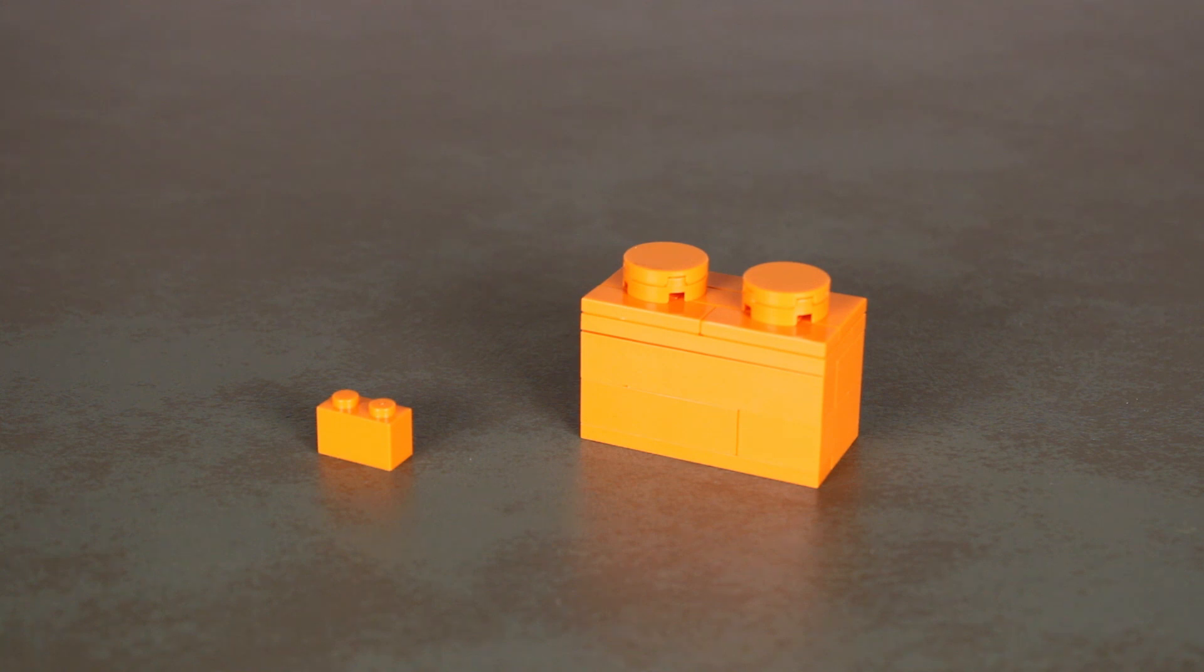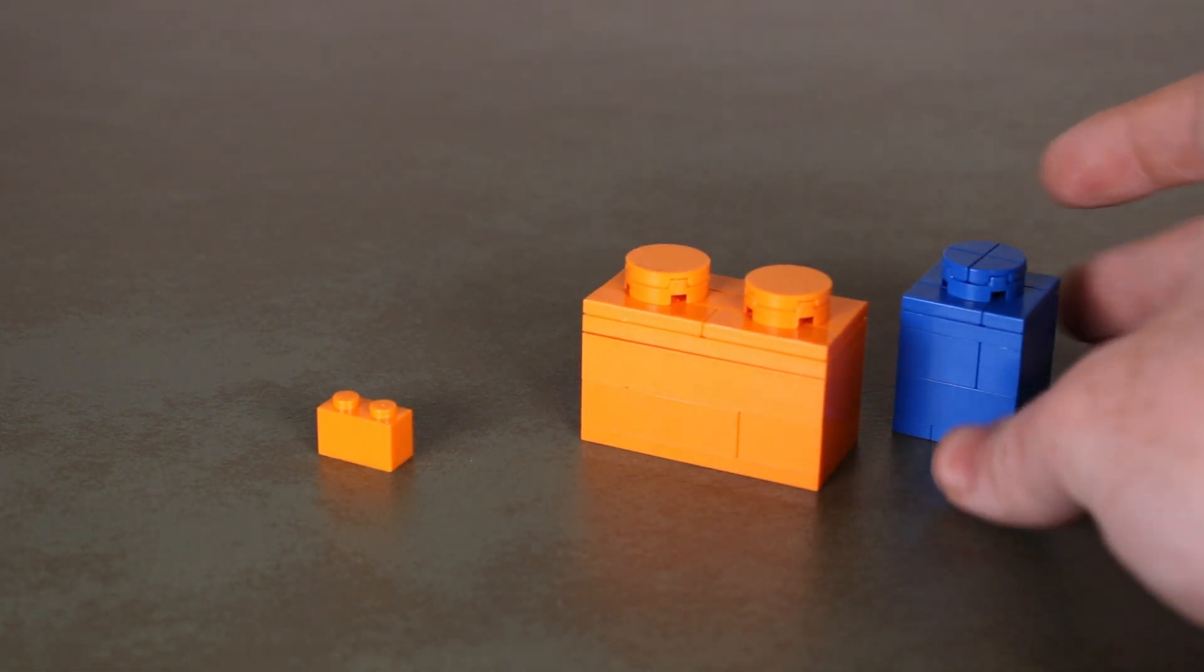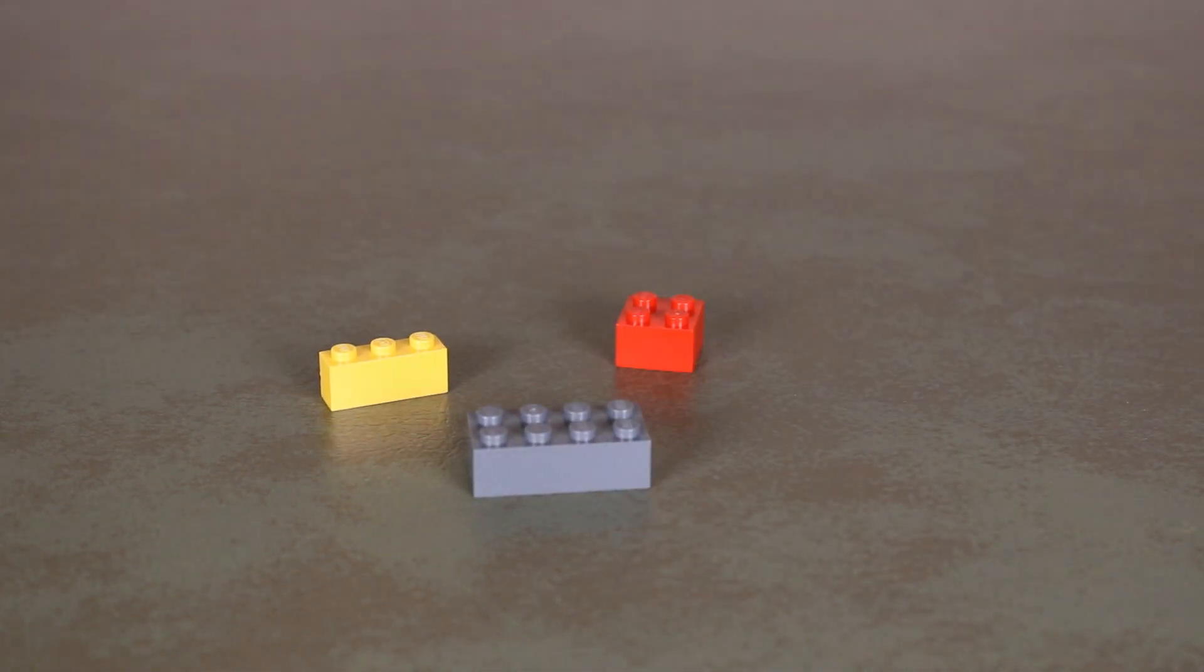And so there we have our 1x2 brick. And now if we compare this is the same scale as our 1x1 brick. And now we can build our 1x3 brick, 2x2 brick, and 2x4 brick.